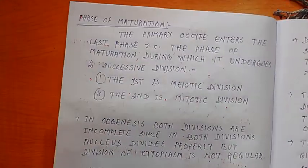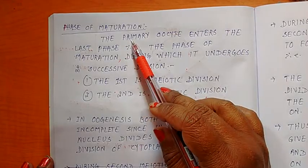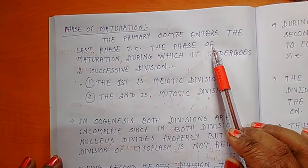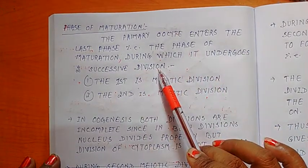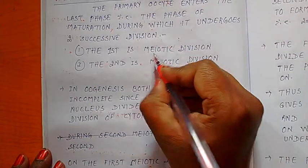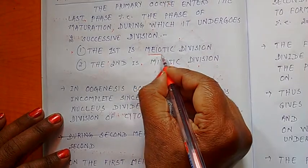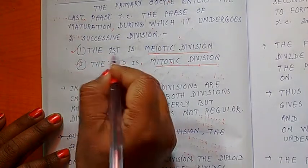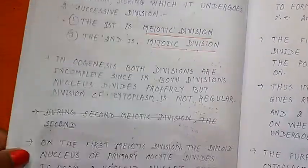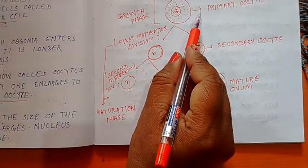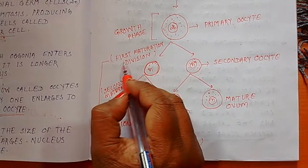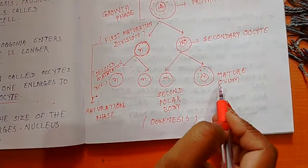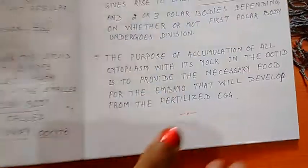Next, the third and last phase — the phase of maturation. The primary oocyte enters the last phase, that is the phase of maturation, during which it undergoes two successive divisions: the first maturation division and the second maturation division. In the first division, the primary oocyte undergoes the first maturation division to form the secondary oocyte. In the second maturation division, it forms the mature ovum along with polar bodies.